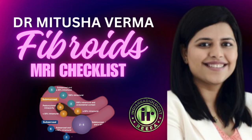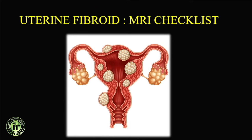Fibroids are now amenable to a lot of treatment options, from non-invasive like MRgFUS to practically invasive — surgery itself, myomectomy or hysterectomy. MRI is important because the field of view is very large and we can provide the exact location of fibroids, their number, and proximity to adjoining structures. Based on T2, T1, diffusion, and post-contrast dynamic sequences, we can assess vascularity to guide management toward MRgFUS or uterine artery embolization.